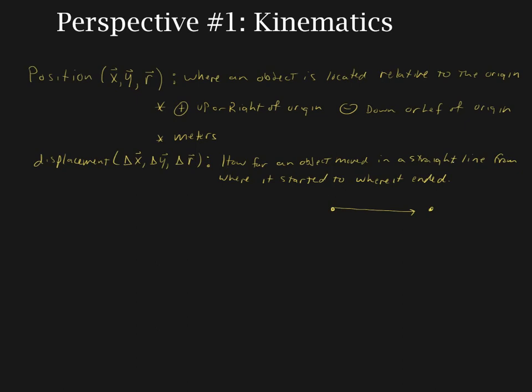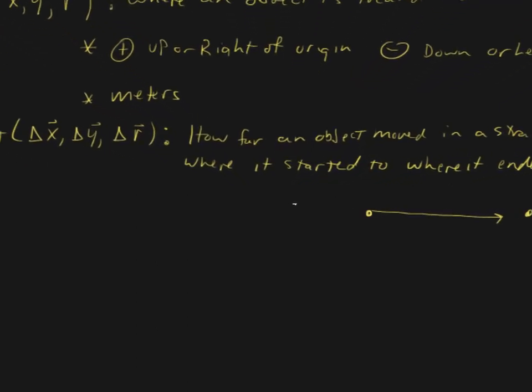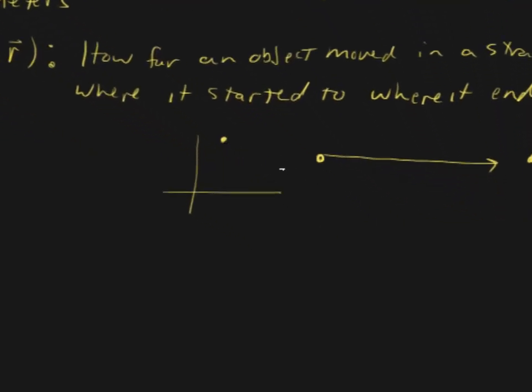This straight line business really becomes important whenever we have objects which are moving in two dimensions. We might have an object which starts here and ends here, so the position vector would be this and this. The vector that we're interested in for displacement is a straight line from where we started to where we ended. This is our displacement vector, delta r.